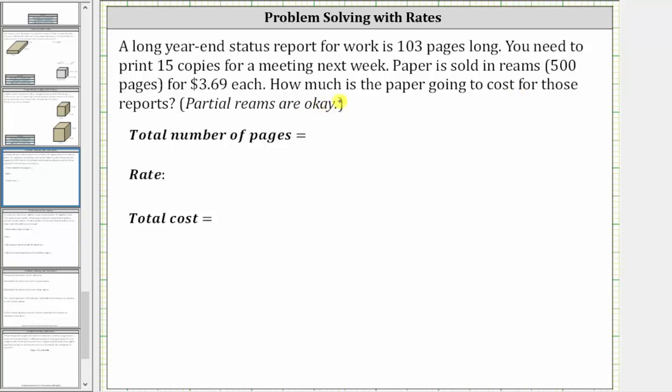Let's first determine the total number of pages needed. Each report is 103 pages and you need 15 copies, so 15 times 103 will give us the total number of pages needed. 15 times 103 equals 1,545, therefore you need 1,545 pages of paper.